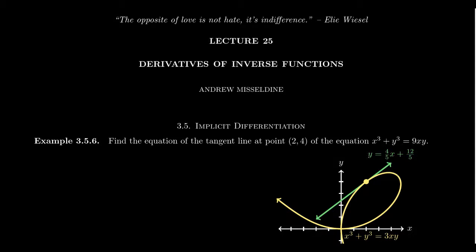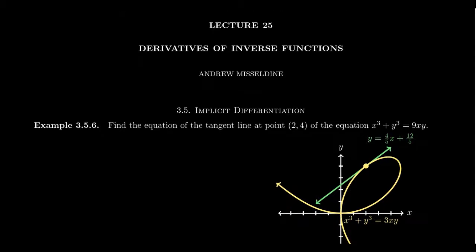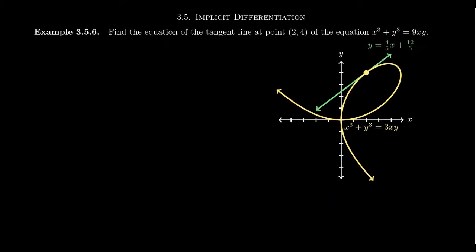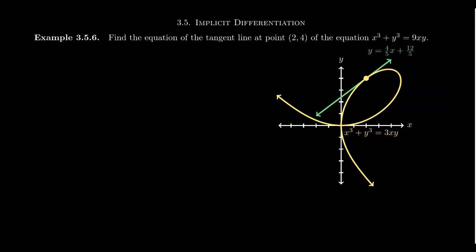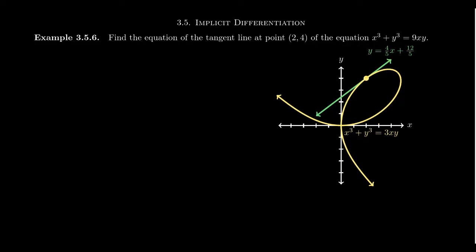We've learned that we can compute derivatives — that is, dy over dx — without necessarily having an explicit relationship y equals f of x. In this video, I want to use implicit differentiation to compute the equation of a tangent line of a curve that you see right here. This curve, which clearly is not a function — it violates the vertical line test in many locations — is what's known as a folium of Descartes. The equation that determines this relationship is x cubed plus y cubed equals 3xy.